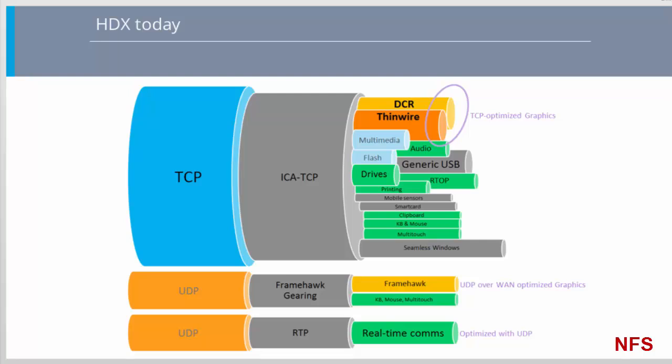First we will look at HDX transport as it exists currently. The ICA stack today is optimized for TCP, and further cost savings accrue from TCP/IP optimized graphics technologies such as Adaptive Display version 2, introduced in 7.11. In addition to the ICA stack, Framehawk and Real-Time Audio are optimized for UDP over WAN, but these run side by side to ICA.